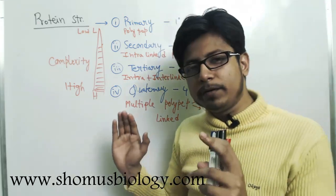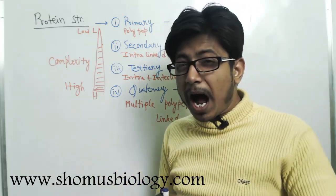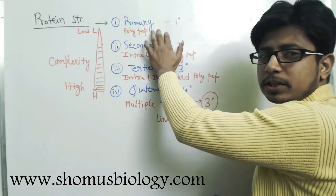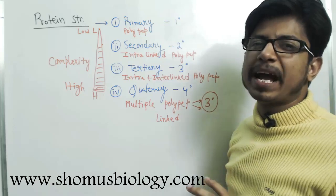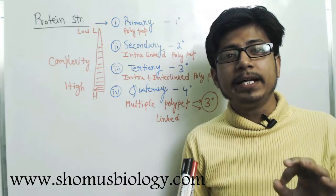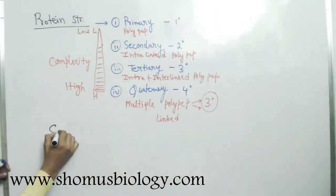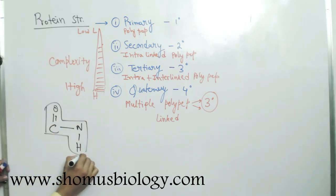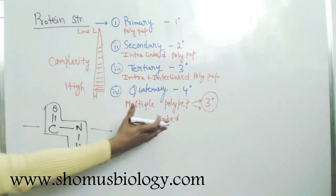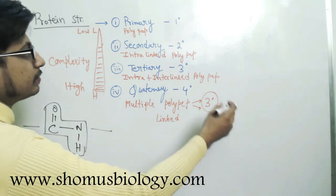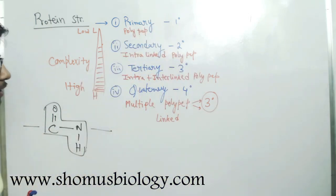Alpha helix is a properly formed secondary structure. The primary structure is a polypeptide chain — simple amino acids linked with each other with the help of a peptide bond, that is the C-O-N-H bond. There are amino acid sequences on both sides of this bond, forming a linear chain that is the primary structure of the protein.